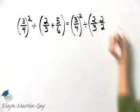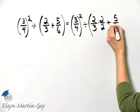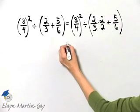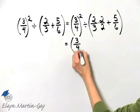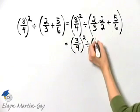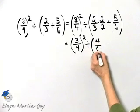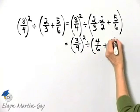So I've got to multiply by two over two and then plus five-sixths. So we have three-fourths squared divided by, this is four-sixths plus five-sixths.